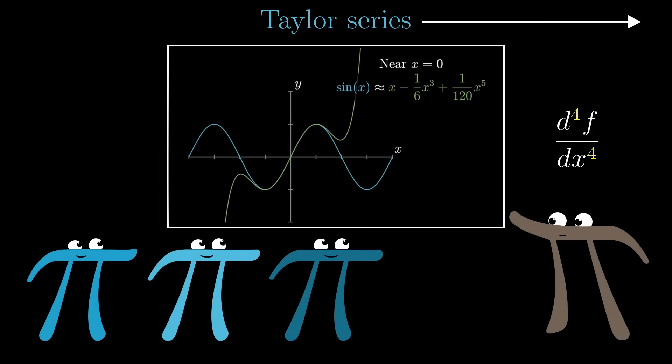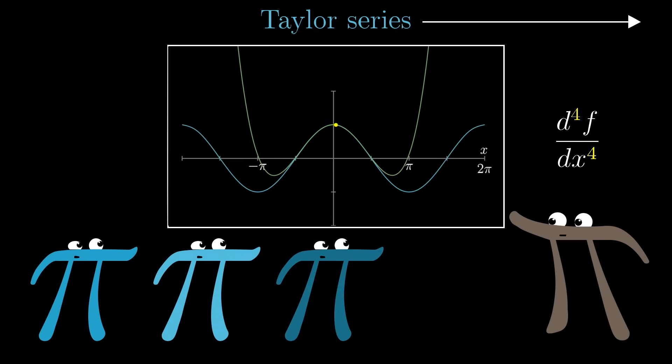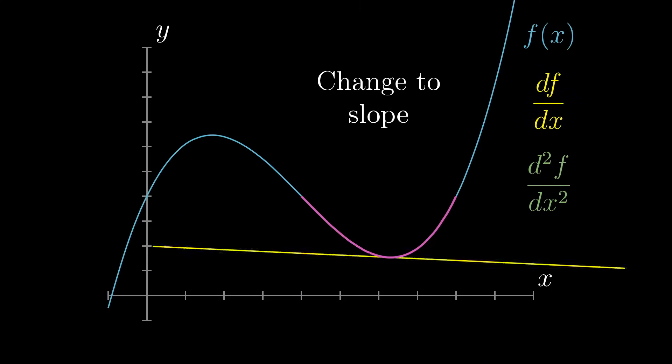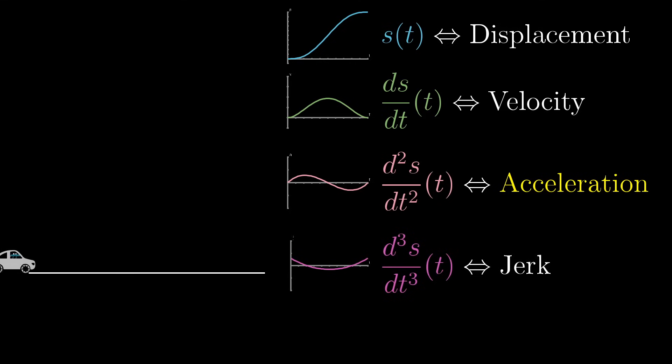But somehow, I've managed not to bring up higher-order derivatives at all so far in this series, so for the sake of completeness, I thought I'd give you this little footnote just to go over them very quickly. I'll focus mainly on the second derivative, showing what it looks like in the context of graphs and motion, and leave you to think about the analogies for higher orders.